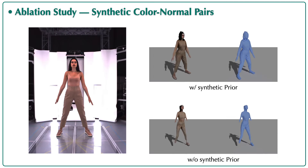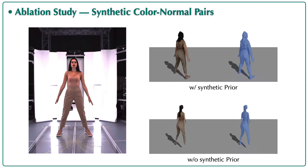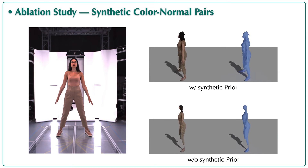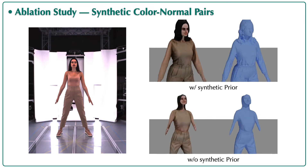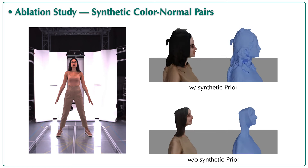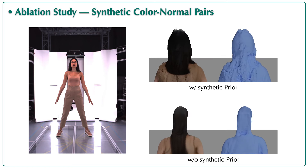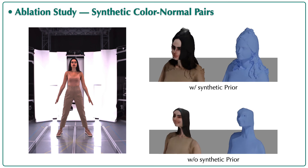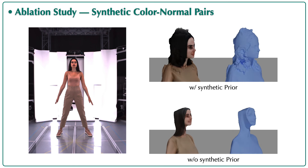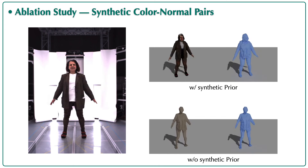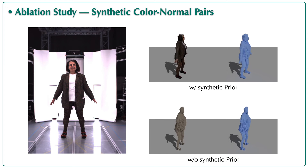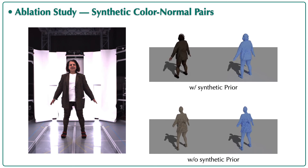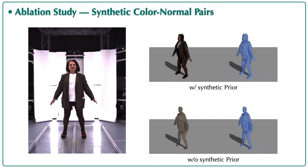Synthetic data significantly improves reconstruction quality in both geometry and texture. Without this prior, the diffusion model fine-tuned only on RGB input images will produce broken outputs — for instance, a body without limbs. Similarly, the synthetic prior-free model produces textureless outputs.